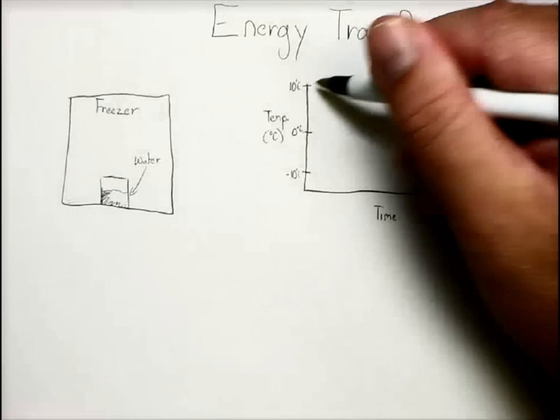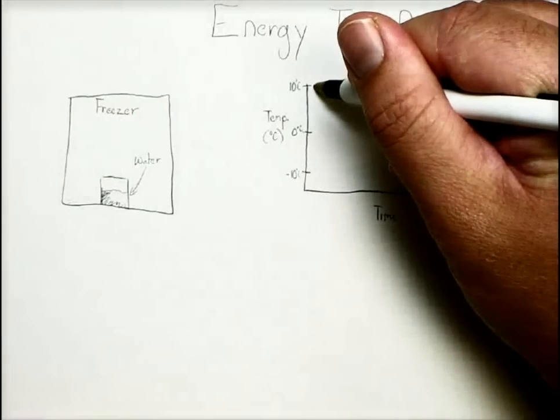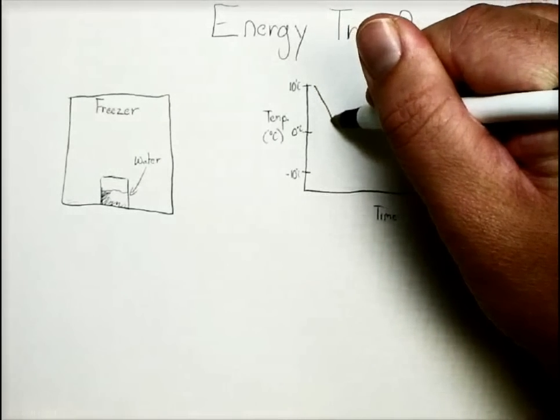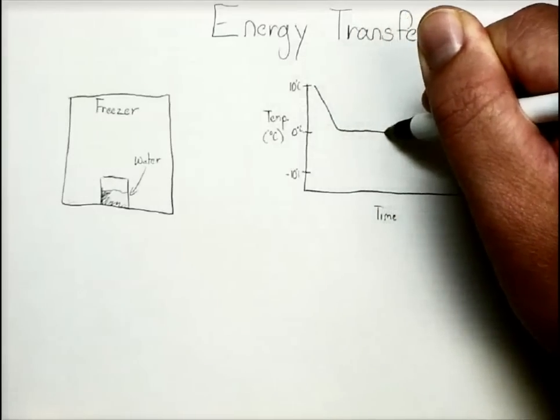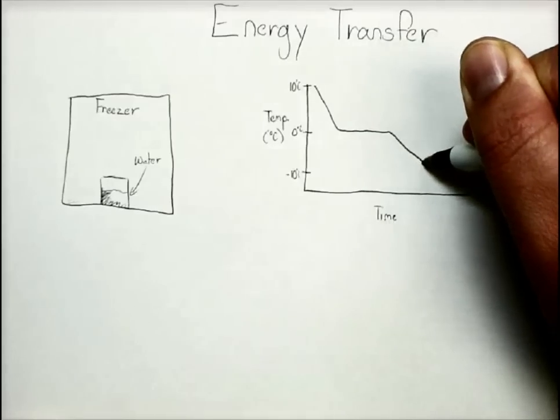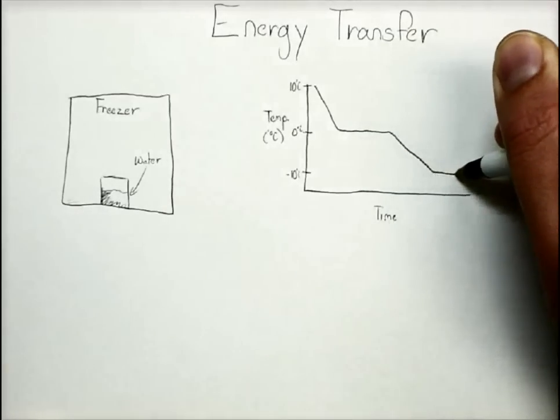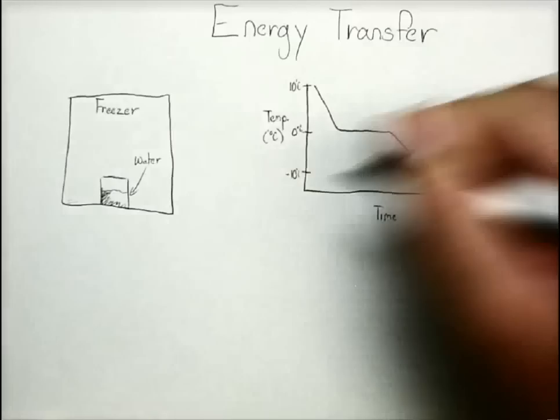As time goes on, what's going to happen is that the temperature of the water will drop until it hits the freezing point. And then that temperature will stay the same for a little while. And then the temperature will continue to drop until it gets to the same temperature as the freezer.